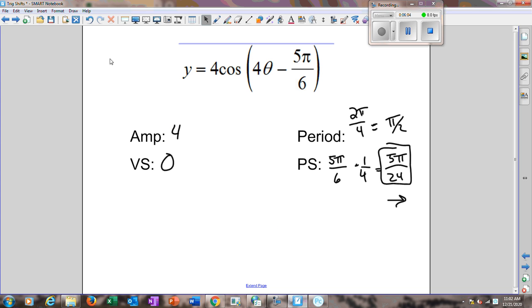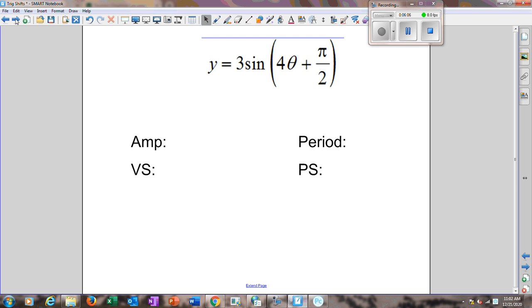Alright, next question. Our amplitude for this one is going to be 3. The period, period for sine is also 2π. So it's 2π over 4 again, which gives us π over 2 as a period. Just taking 2π, my normal period, and dividing it by 4.